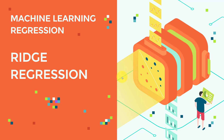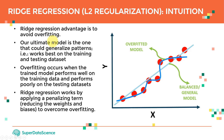Hello everyone and welcome to this lecture. We're going to cover the basics of Ridge regression. Ridge regression's main advantage is to avoid overfitting. Our ultimate goal is to obtain a regression model that can generalize patterns — working well on both the training data and the testing data.